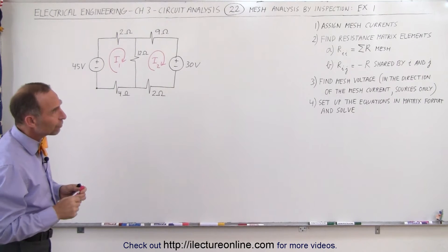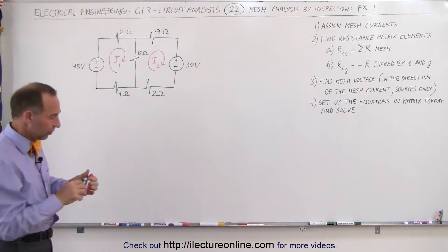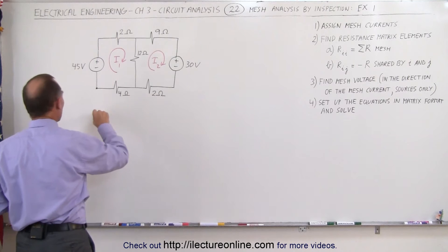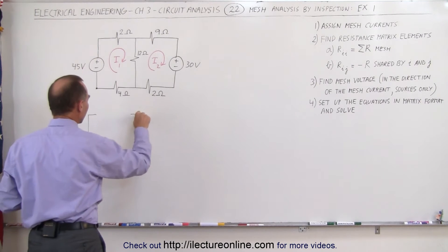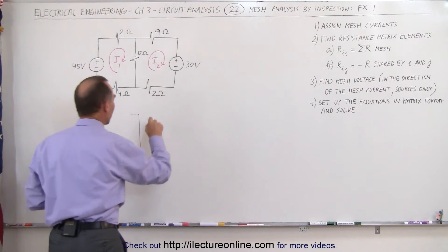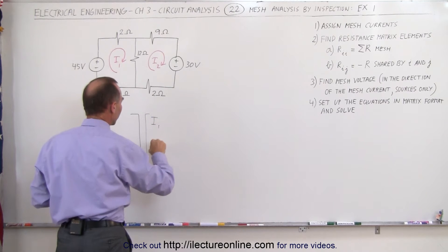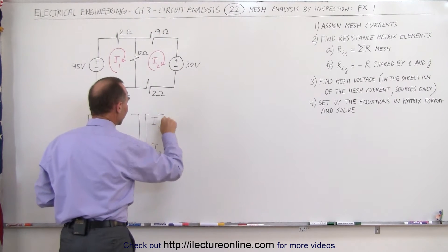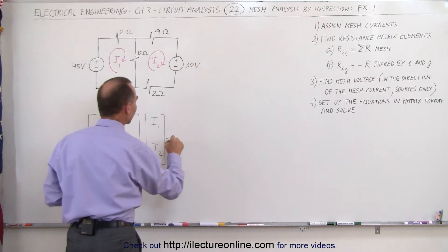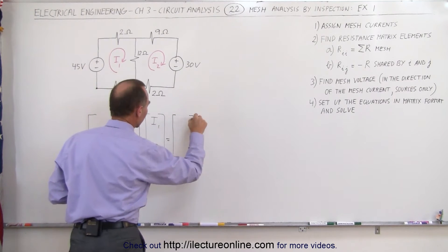The next thing we want to do is find the resistance matrix elements, because eventually we want to have something that looks in this format. We have the resistance matrix right here multiplied times the current matrix, because essentially what we're trying to do here is find the unknown currents, and then we set that equal to the voltage matrix.